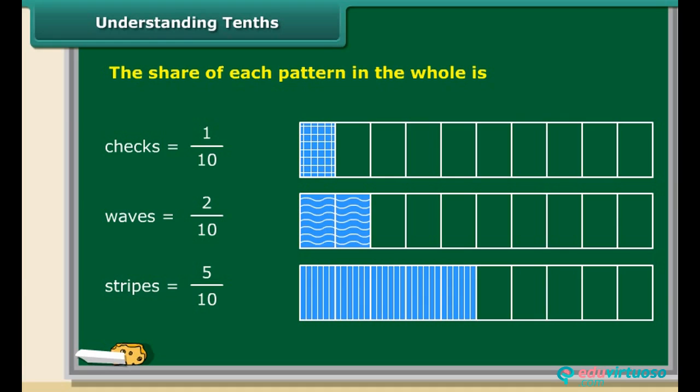Thus, while 1 part is 1 tenth, 2 parts show 2 tenths and 5 parts represent 5 tenths. 1 tenth can be written as 0.1 in decimal notation.